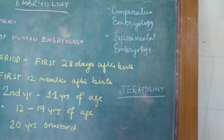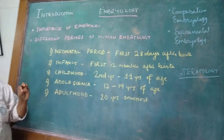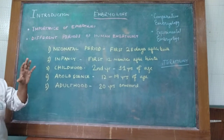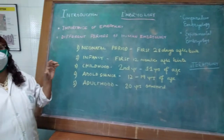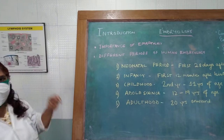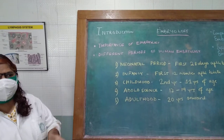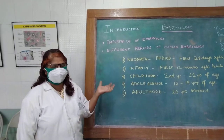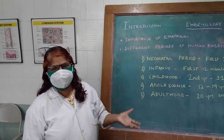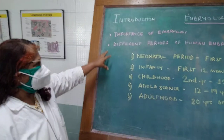So embryology is called general embryology, systemic embryology, comparative embryology, and experimental embryology. The last one — teratology — is very important for gynecologists and pediatricians to know about, as it is the science that deals with congenital abnormalities of babies. If you don't know embryology and how the baby is growing, it will be very difficult for a pediatrician to identify diseases which occur due to abnormal development of the baby.